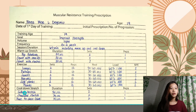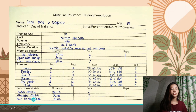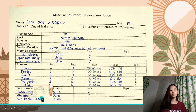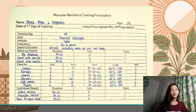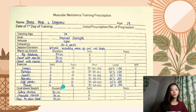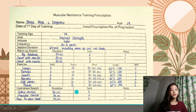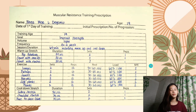For the cool-down, the stretches are cobra stretch, shoulder stretch, and knee-to-chest glute stretch. Each cool-down stretch has a duration of 30 seconds, 2 sets, and 1 repetition.